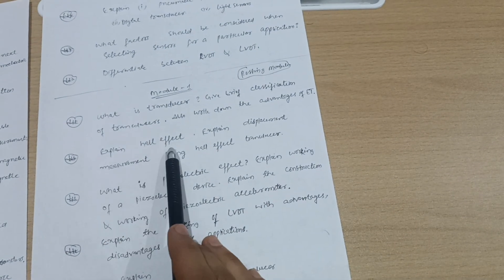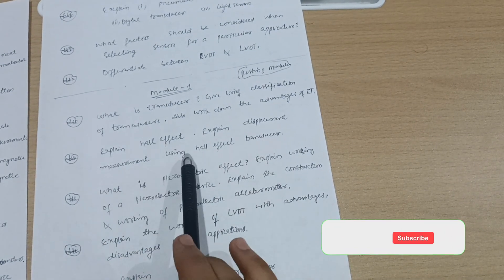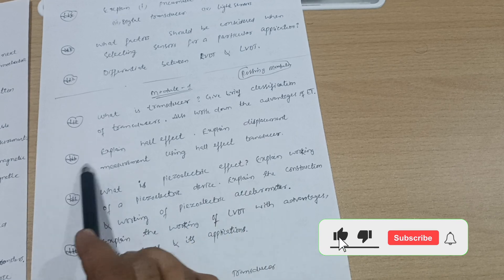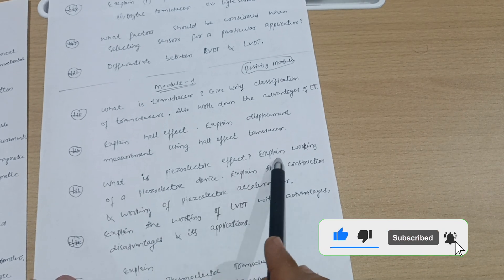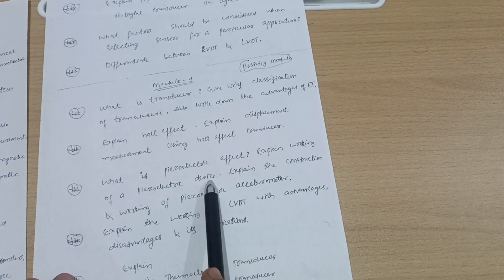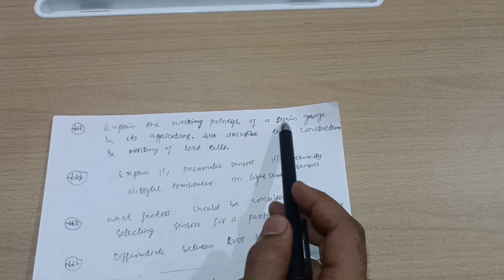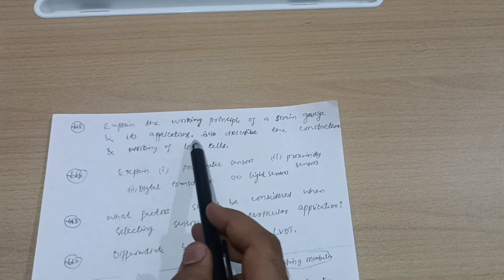Next is explain Hall effect, explain displacement measurement using Hall effect transducer - this is super important. What is piezoelectric effect? Explain working of piezoelectric device. Explain the working principle of strain gauge and its applications.